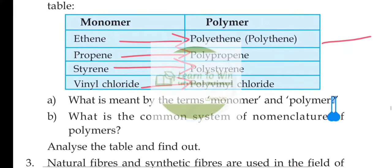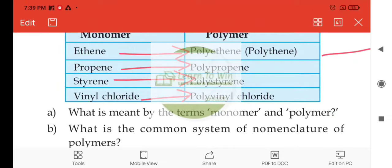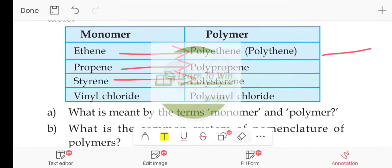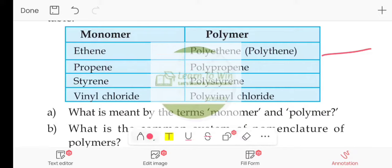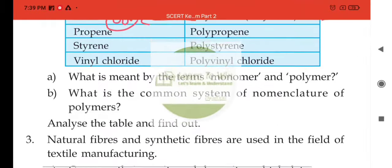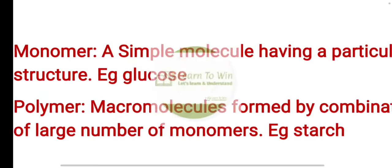What is meant by monomer and polymer? A polymer is a macromolecule formed by the combination of a large number of monomers. A monomer is a simple molecule having a particular structure. For example, glucose is a monomer.